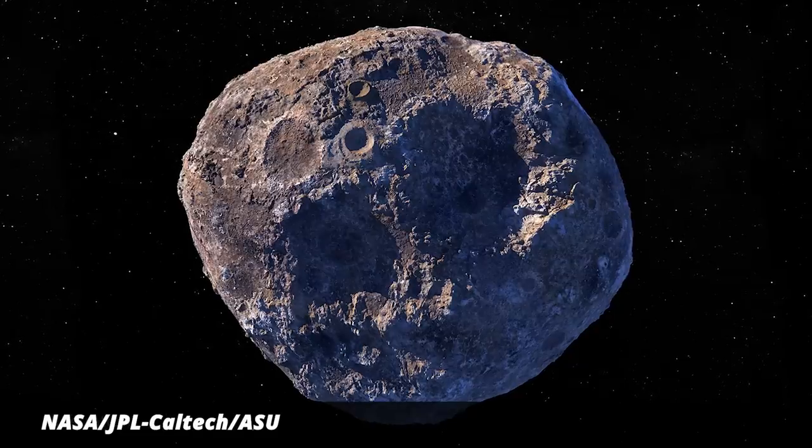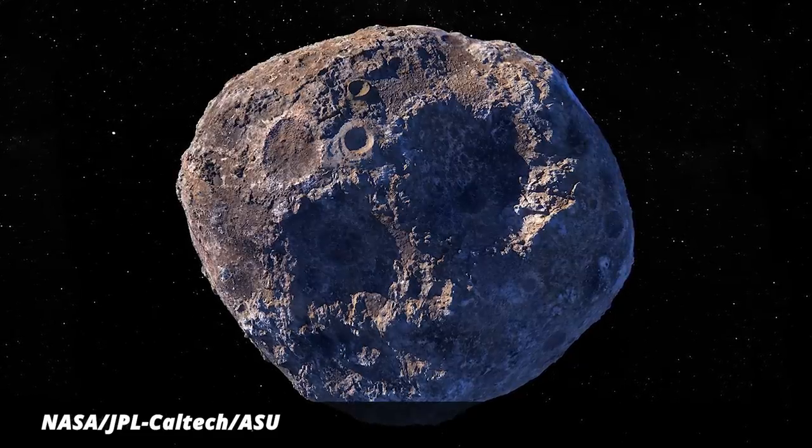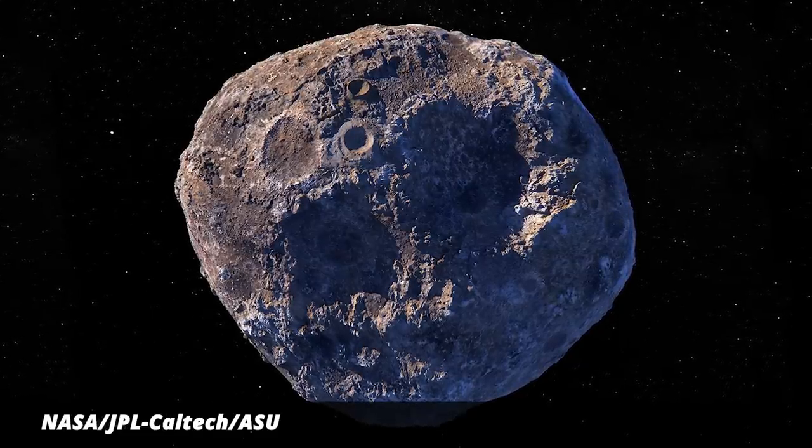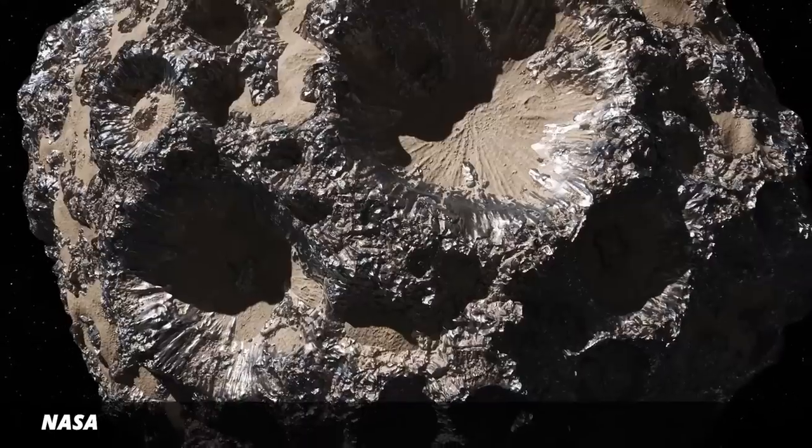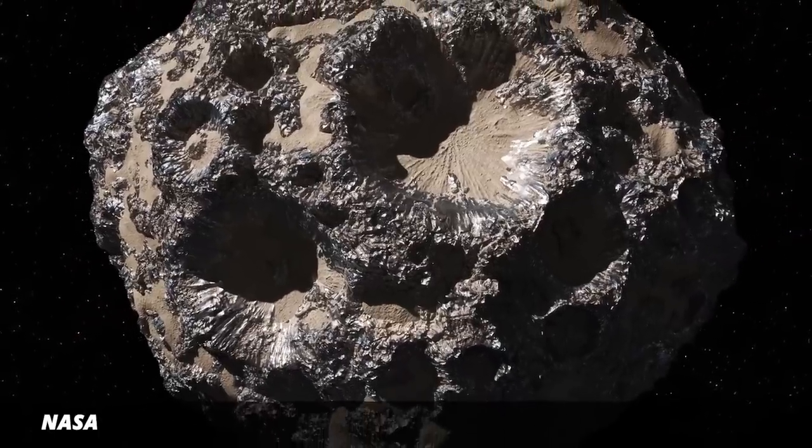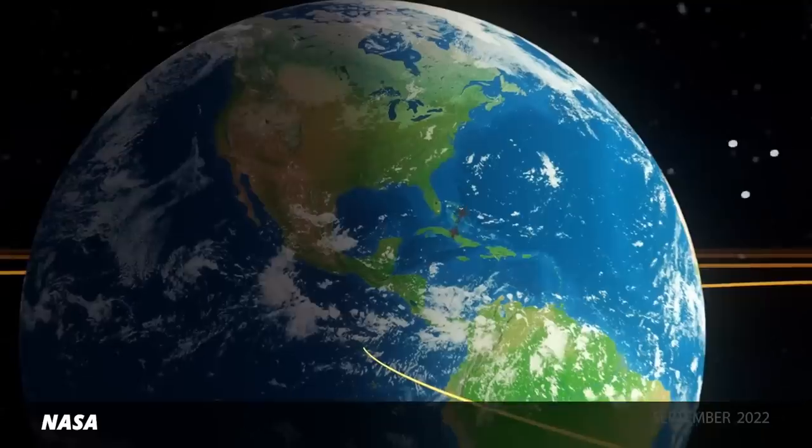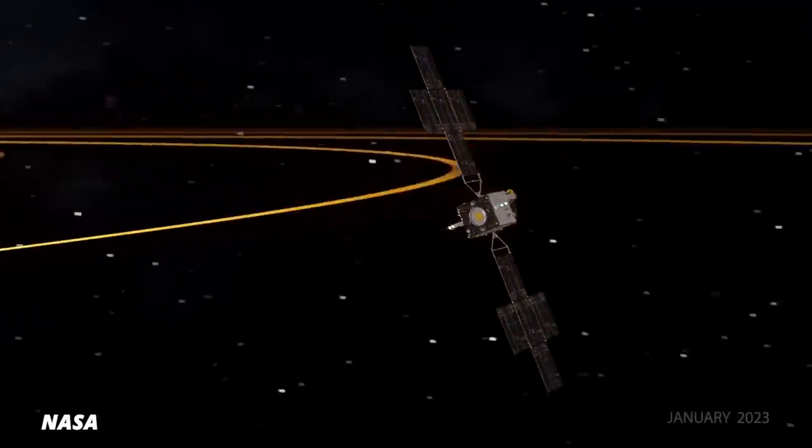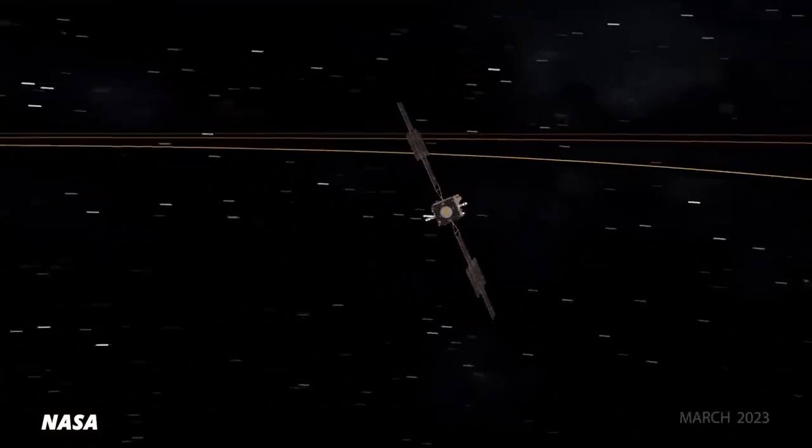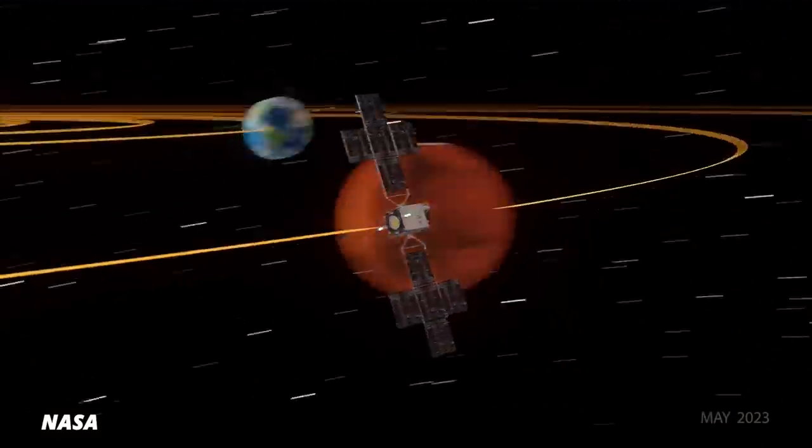NASA's mission to the asteroid Psyche is back on track. Its launch was originally scheduled for a period between August and October last year, but it had been delayed due to software issues. Good to know it's not just me. The main goal behind the Psyche mission is to learn more about planetary cores and the formation of our own planet. We know very little about Earth's core, despite living on top of it. Scientists think that Psyche might have a similar composition to that of Earth's core.